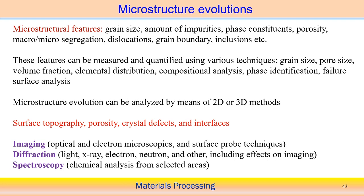Phase identification and analysis of the failure surface — looking into what was the cause of the failure — all these microstructural features can be analyzed using different measurement techniques. All these microstructure evaluations can be analyzed using either 2D or 3D methods. There are many methods available. I am not going into much detail about each method, just giving an overview of the different methods and processes.